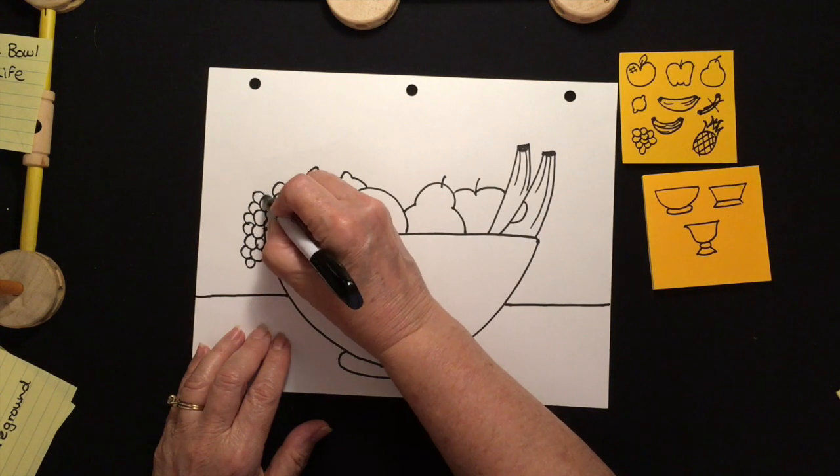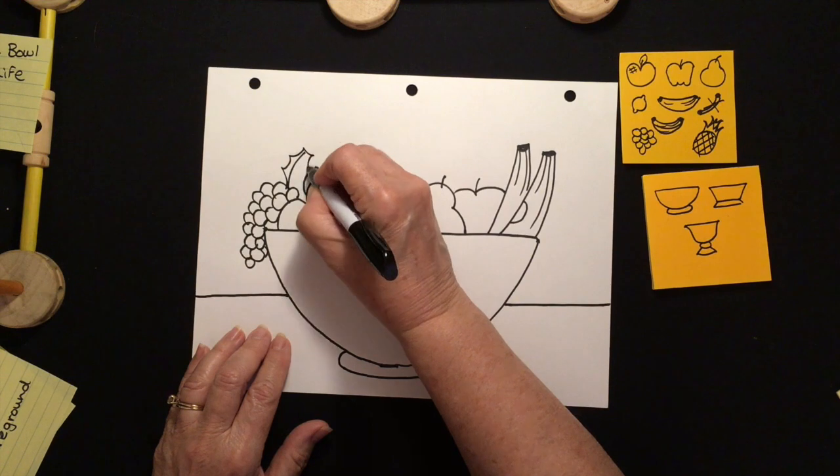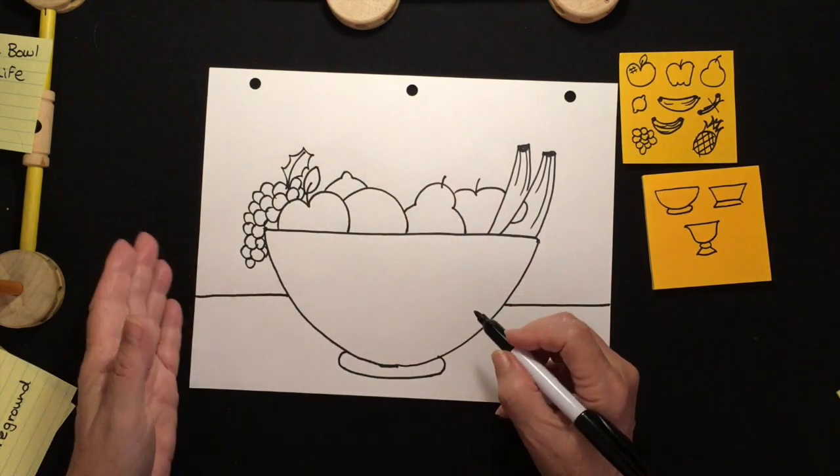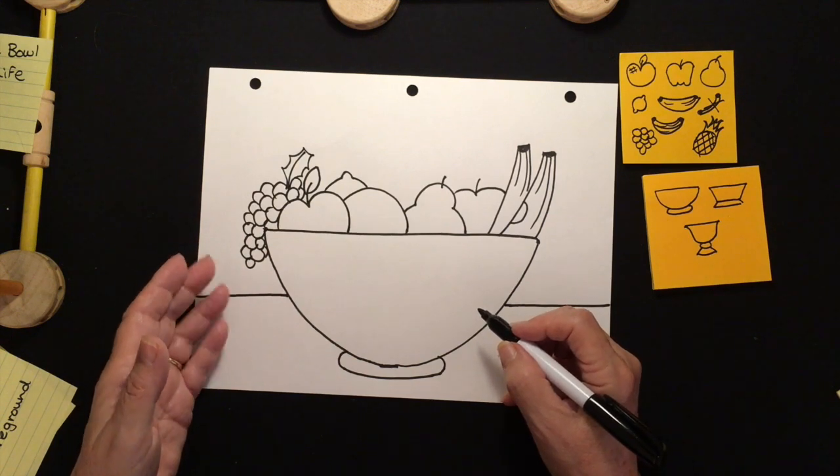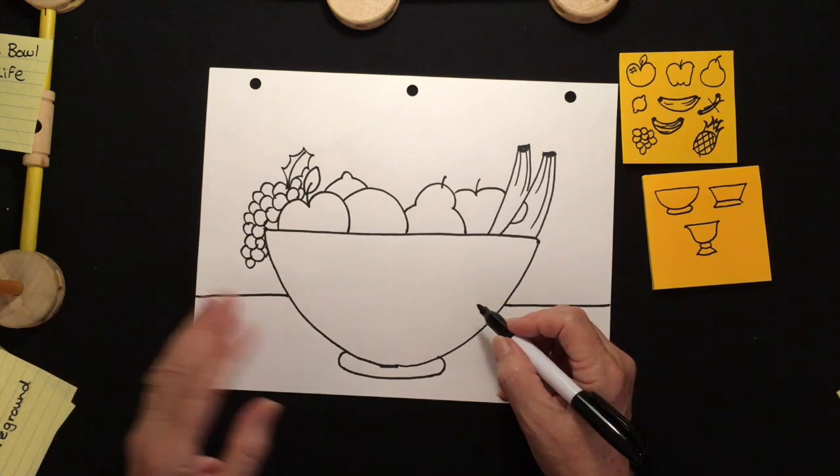You can make your bunch of grapes as large as you want. And later, when you paint or color them in, you can color them in any color you want. I've seen grapes at the grocery store that are red, some are purple, some are yellow, some are green. You decide.